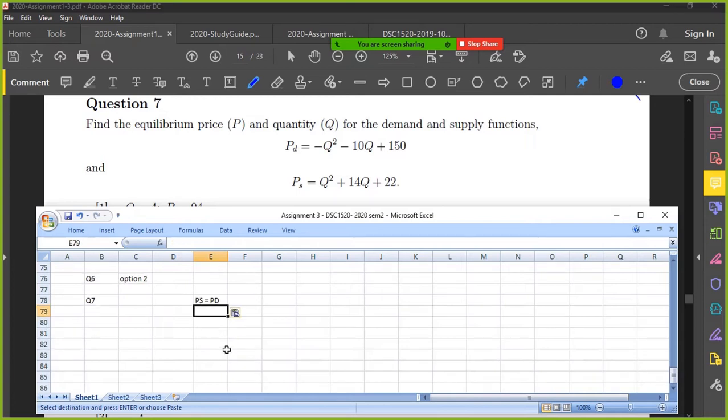PS equals PD. Alright, so Q squared plus 14Q plus 22 equals minus Q squared minus 10Q plus 150.